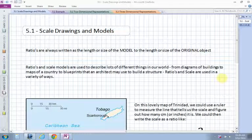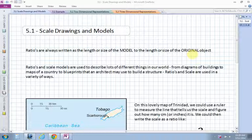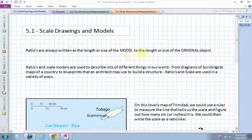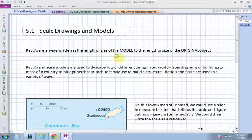Section 5.1 is Scale, Drawings, and Models. I'm going to go through the notes so you understand how to work through the example as well. Ratios are always written as the length or size of the model to the length or size of the original object, so you have the model to the original. They're always written with a colon that looks something like this.